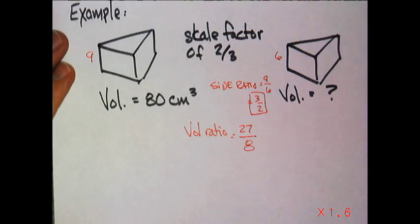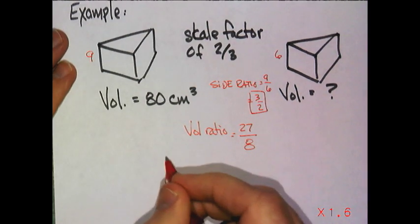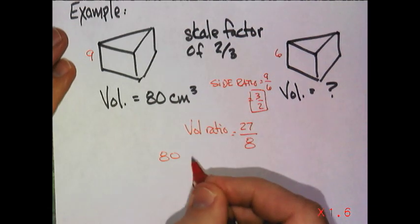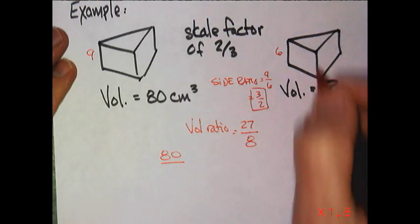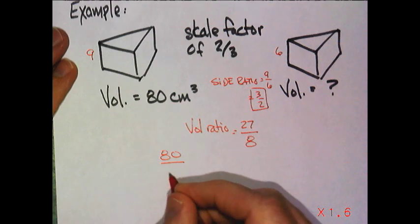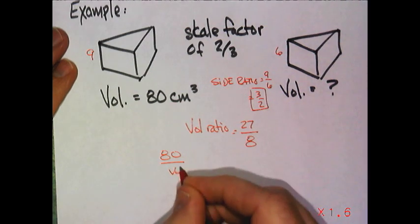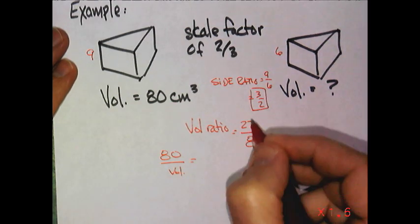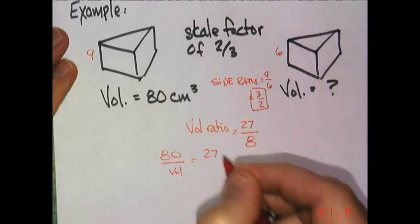Then, all I need to do is set up a proportion where 80 is to, I don't know, so we can just put a V in there, is equal to 27 compared to 8.